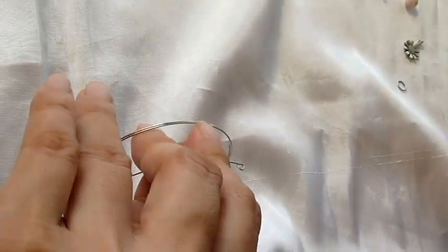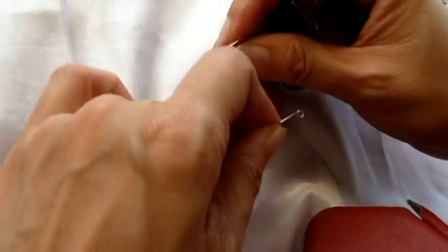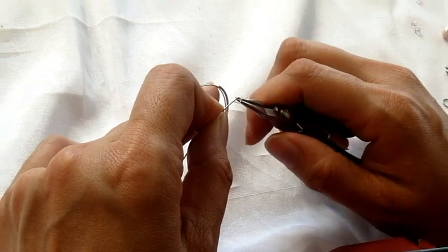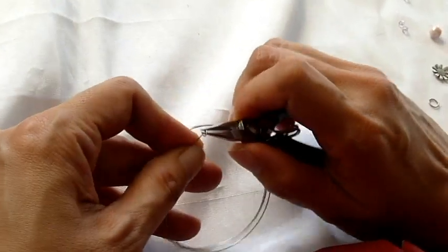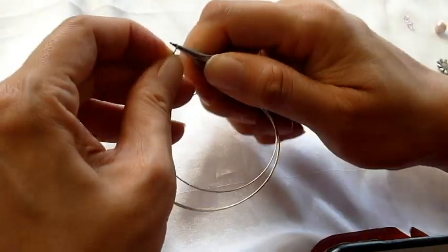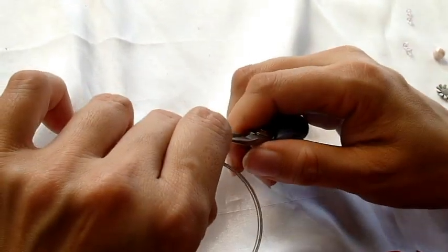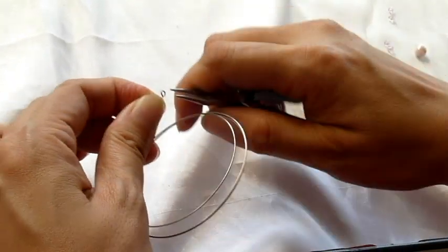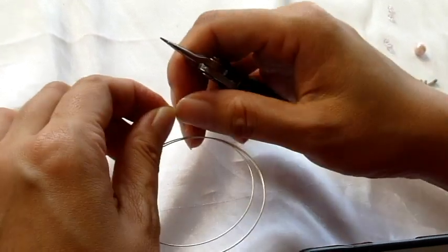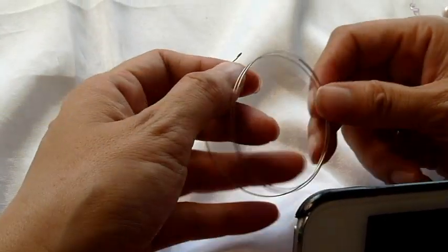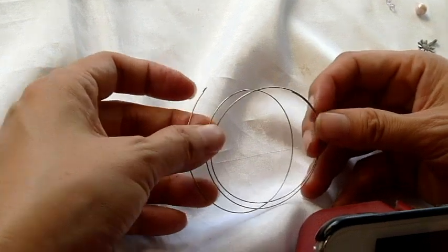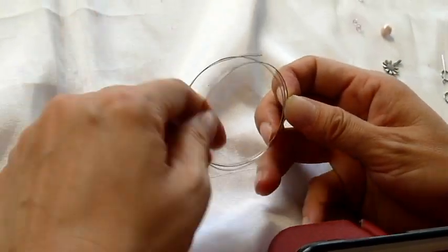So now I have a small loop that looks like a P-shape. I can make it to the center by reopening the loop and closing it back again. So now once you have the loop at the end, you can start placing the beads.